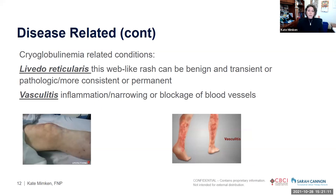Livedo reticularis, on the left, is a web-like looking rash that can be benign and transient or more consistent and permanent. It is caused by lack of blood flow between vessels, and can very rarely cause ulcers or skin eruptions. It is often not painful. Vasculitis on the right involves inflammation, narrowing, or blockage of blood vessels — which can be quite painful, cause poor wound healing and ulcerations, and sometimes requires referral to a vascular specialist or wound care.